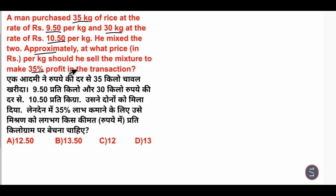Okay, first we will see the total cost price. Total CP is how much? For 35 kg of rice at Rs. 9.50 per kg and 30 kg of rice at Rs. 10.50 per kg.